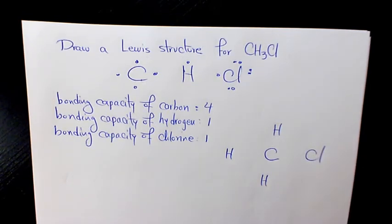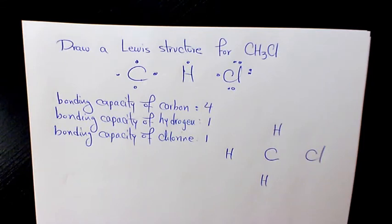Next, we need to add up the number of valence electrons available in an atom of each of the elements. This number represents the total number of electrons, or dots, you will need to have in your Lewis structure.